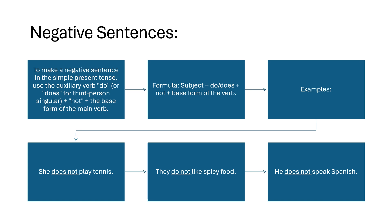How to make negative sentences: To make a negative sentence in simple present tense, we use auxiliary verb 'do' or 'does' for the third person singular, plus 'not', plus the base form of the verb. Formula: subject + do/does + not + base form of the verb. For example: she does not play tennis; they do not like spicy food; he does not speak Spanish.